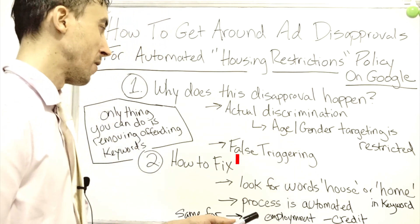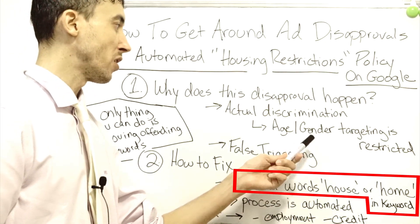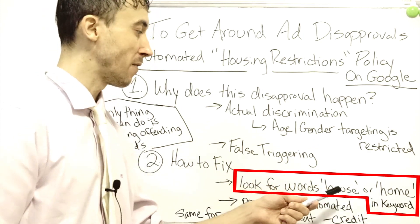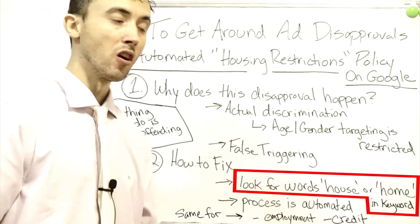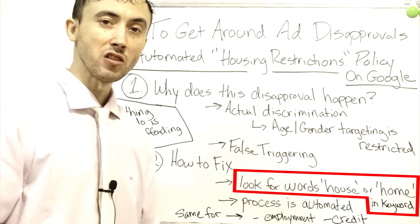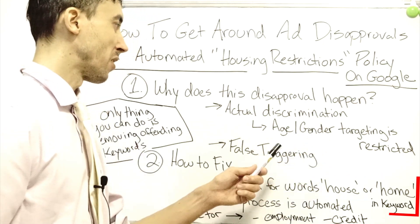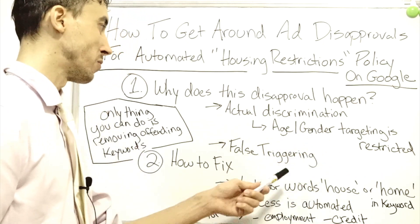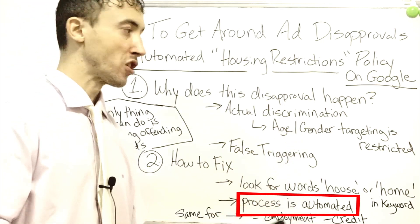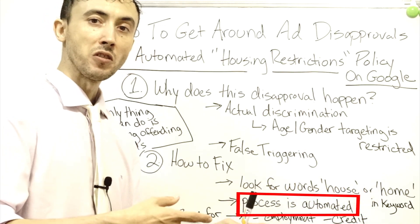If you do want to use your age and gender targeting, the only thing you can do, as far as I've found, is just remove 'house' and 'home,' as well as anything to do with credit or employment, from your keywords. Otherwise, you're stuck — you're not going to be able to use the age and gender demographic targeting settings in terms of bid adjustments. The process is automated; their system goes and checks for these keywords.